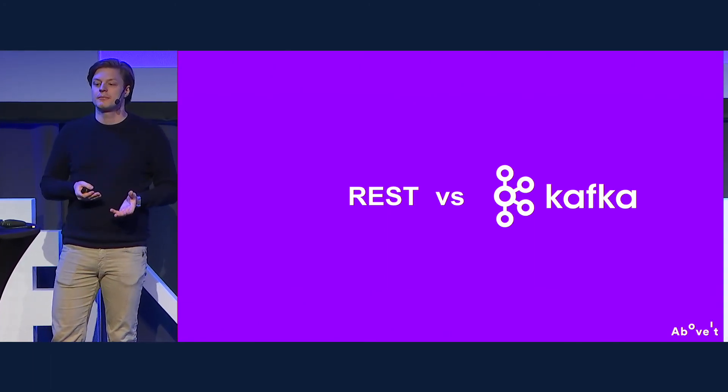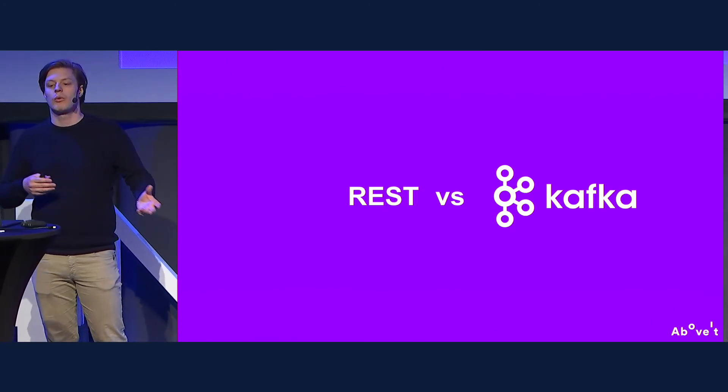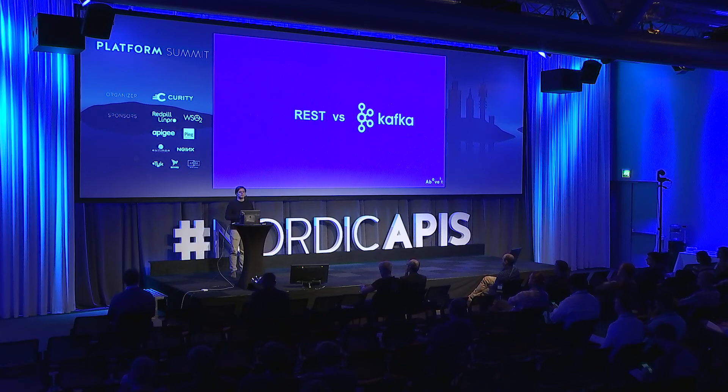REST versus Kafka — you shouldn't choose one or the other. Synchronous versus asynchronous APIs is not an either/or decision; there is still a need for REST, gRPC, or any synchronous API. Instead of putting these two types against each other, we should combine them. Adding Kafka to a system opens a whole range of new possibilities that will bring business value. Kafka helps evolve your APIs to a level that request-response-only APIs cannot reach.